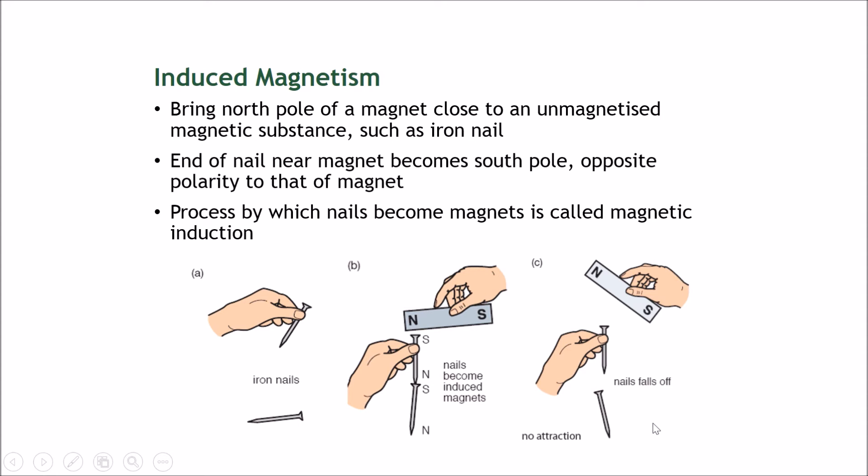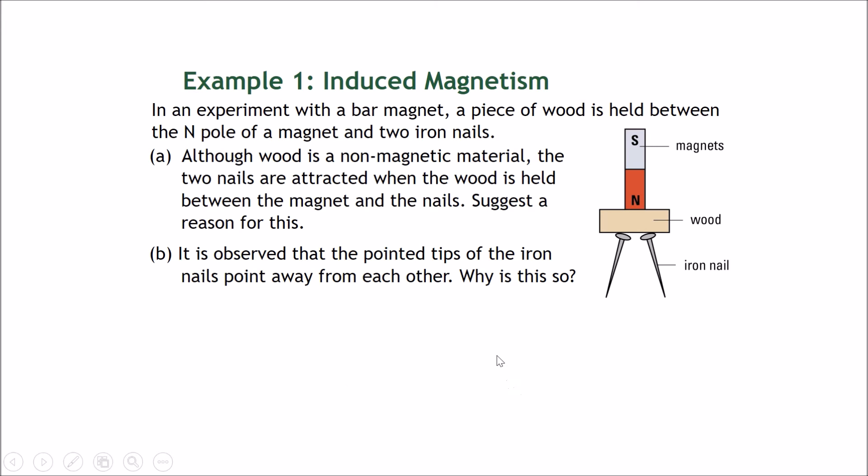Example 1: Induced Magnetism. In an experiment with a bar magnet, a piece of wood is held between the north pole of a magnet and two iron nails. Although wood is a non-magnetic material, the two nails are attracted when the wood is between the magnet and the nails. Suggest a reason for this.